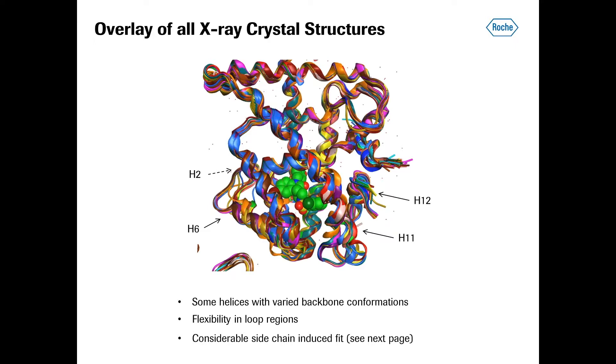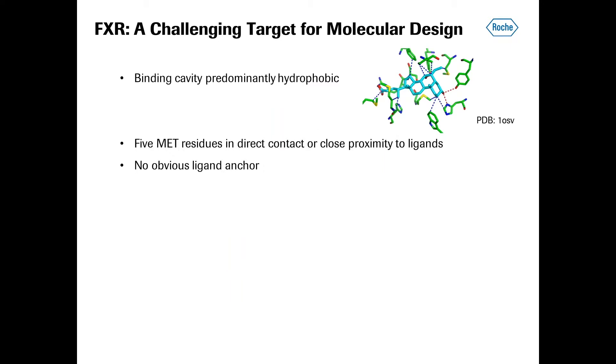I have an overlay of all the X-ray crystal structures in the data set. There is considerable protein flexibility that becomes apparent. Some helices, which are in close proximity to the ligands, show very different backbone conformations. These are shown here: Helix-2, which is more towards the back than Helix-6, Helix-11 here, and Helix-12 in the usual nuclear hormone receptor nomenclature. Obviously, there is some flexibility in the loop regions, connecting the different alpha helices. And there is additionally quite a substantial side chain induced fit, which I will show you in a bit more detail on the next page.